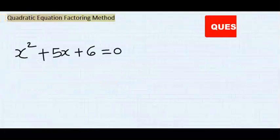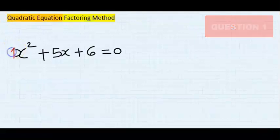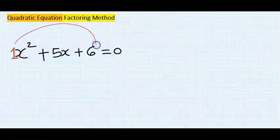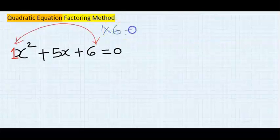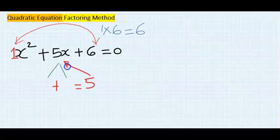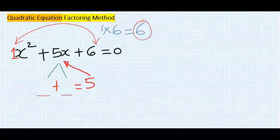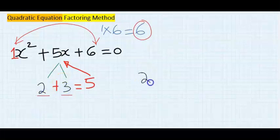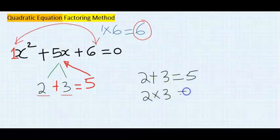Let's solve this quadratic equation. Step one: use the coefficient of x² to multiply the constant — that is one multiplied by six, giving you six. Step two: split the middle term. Think of two numbers that add to give five and multiply to give six. The two numbers are two and three, because two plus three equals five and two times three equals six.